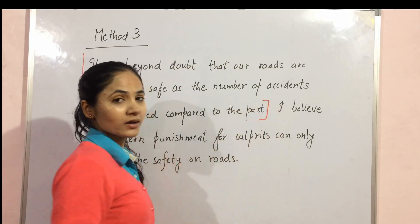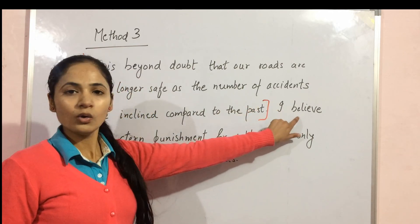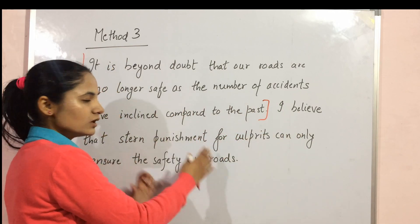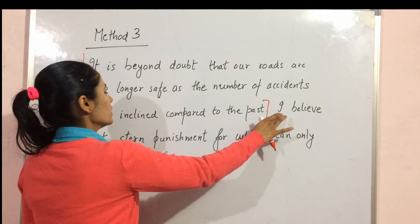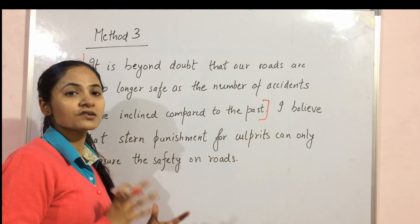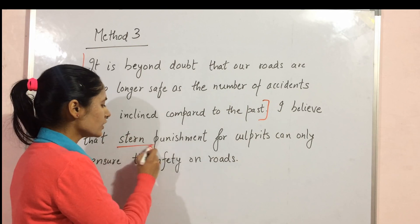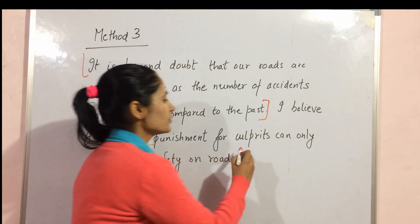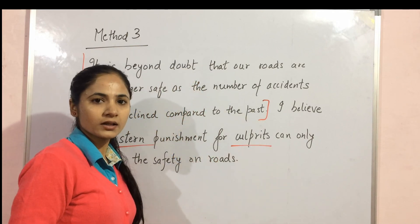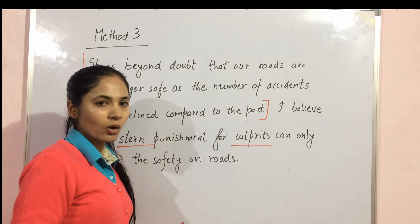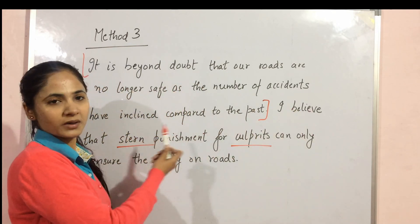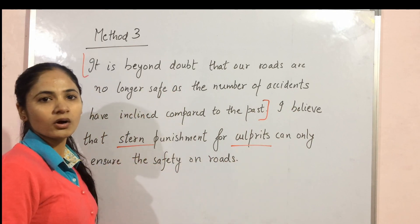Now, what did I do here? I combined the information and gave an opinion. The original word was 'stricter punishment' — I used the synonym 'stern punishment.' For 'driving offenders,' which means those who are doing wrong driving, I rephrased it as 'those who break the law' or simply 'culprits.' So: 'I believe that stern punishment for culprits can only ensure the safety on roads.'